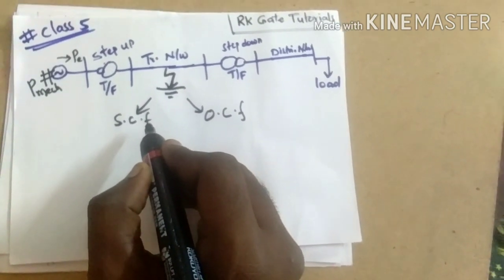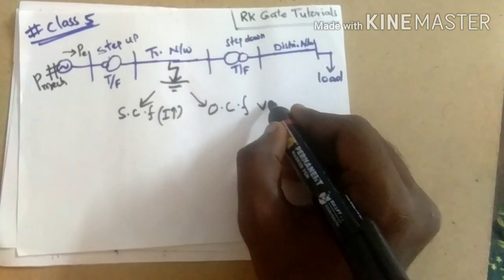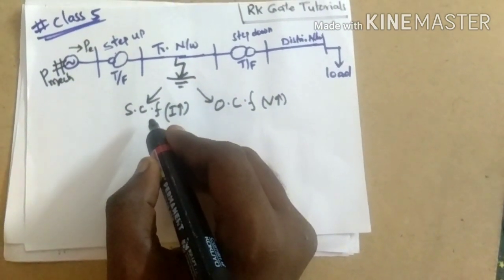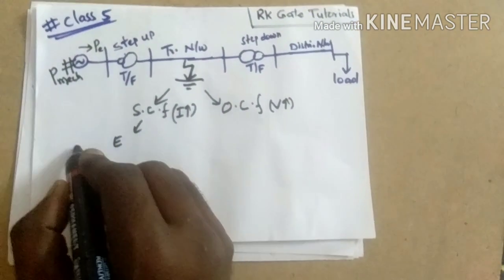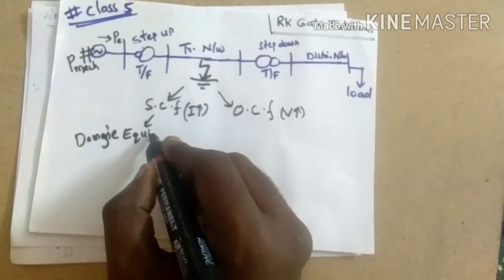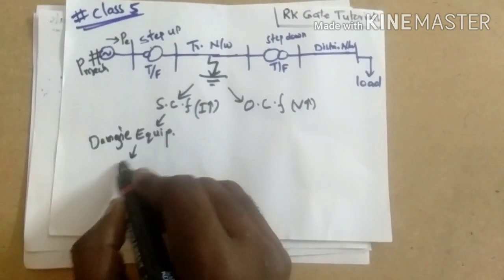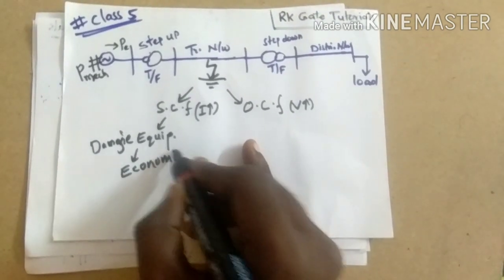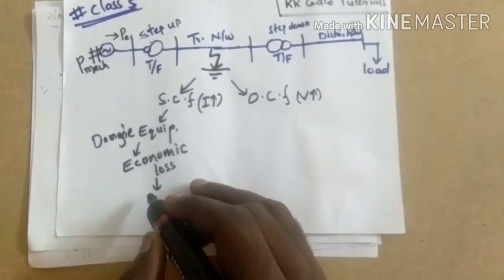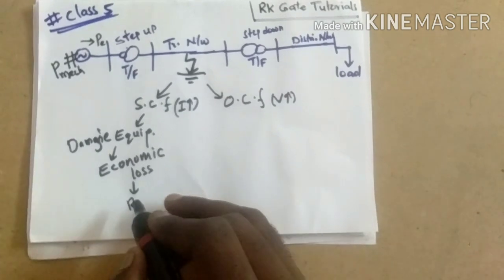Short circuit faults result in over-currents. Open circuit faults result in over-voltages, due to which the insulation of the conductor may be damaged, and due to the heavy currents the equipment gets damaged. This damage leads to economic loss and real-time distribution problems — the power that is supposed to be transmitted to the load is stopped.